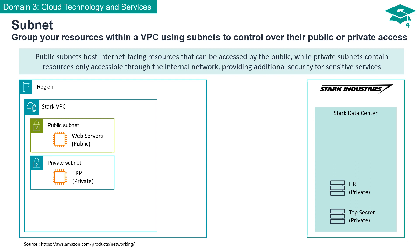Subnets are like virtual compartments within your VPC where you group and isolate your resources. These resources can be Amazon Elastic Compute Cloud instances, databases, or other AWS services.